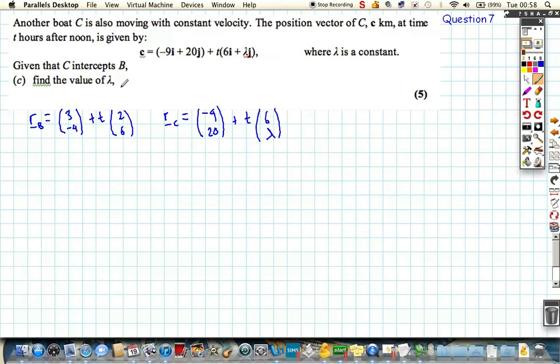Now, given that C intercepts B, well, if they intercept, if B and C intercept, we know that the position of, the position vector of B must be identical to the position vector of C at that time. So, what we can do is we can set up, means the I components must be the same, and so if we look in the I components, we know that reading across, and this is why I write things in columns, or vector questions in columns, we've got 3 plus 2t is equal to the I components of the boat C, which is minus 9 plus 6t, and we can then see that we could do the same with the J components.